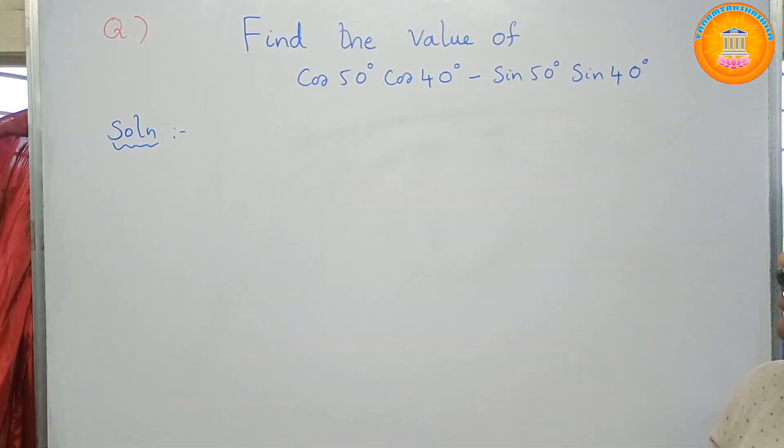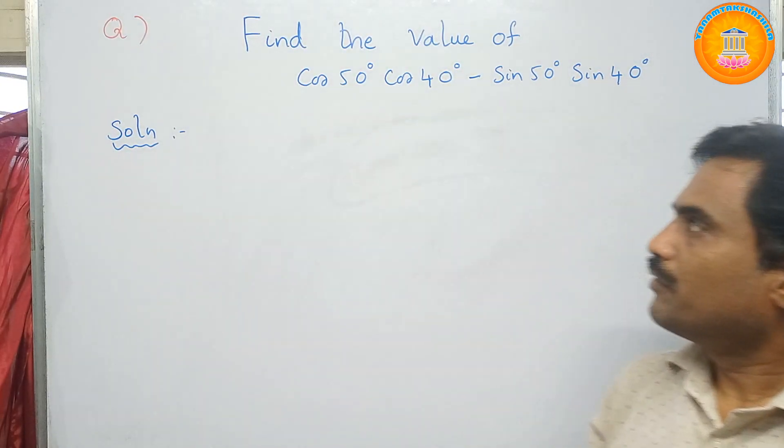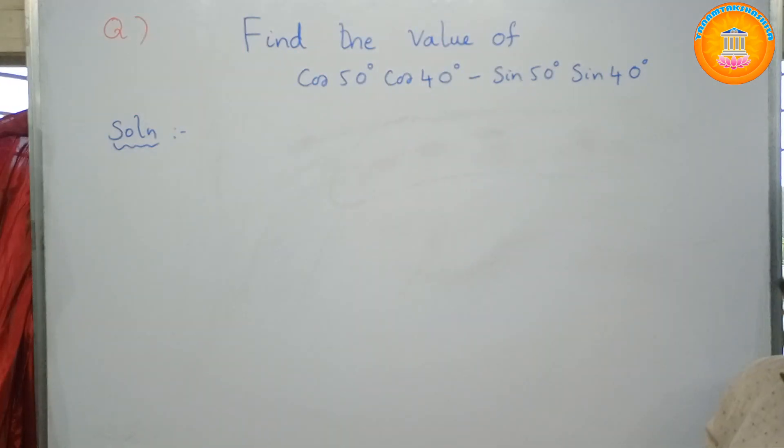Now, if you observe this problem, this problem is of the form cos A cos B minus sin A sin B. Here, A value is 50 degrees and B value is 40 degrees.